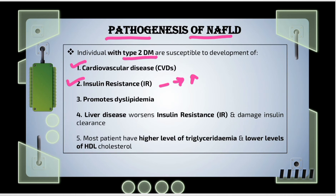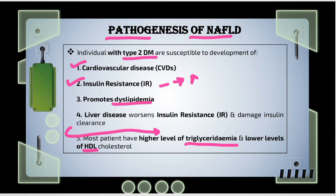Type 2 diabetes mellitus patients are also susceptible to developing dyslipidemia, which can manifest as higher levels of triglycerides and lower levels of HDL cholesterol. Type 2 diabetes also influences the development of liver diseases, and liver disease itself worsens the condition of insulin resistance in patients with diabetes, and can also affect insulin clearance from the body.